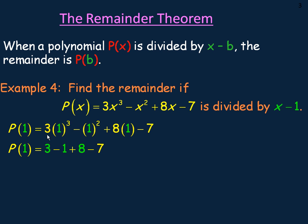1 cubed is 1 times 3 is 3. 1 squared is 1. 8 times 1 is 8, minus 7. So 3 minus 1 is 2, plus 8 is 10, minus 7 would be 3. So the remainder should be 3.